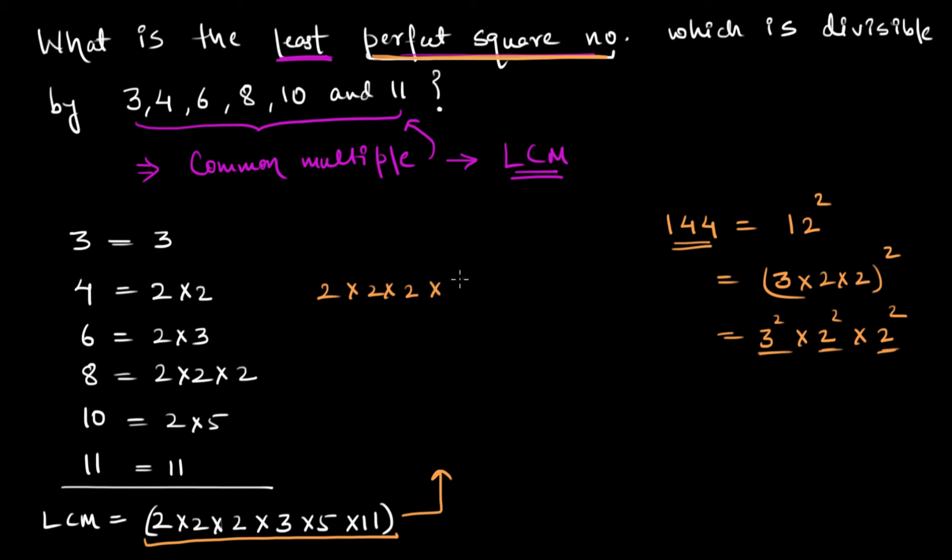So what I have here is 2 times 2 times 2 multiplied by 3, again multiplied by 5, and finally 11.